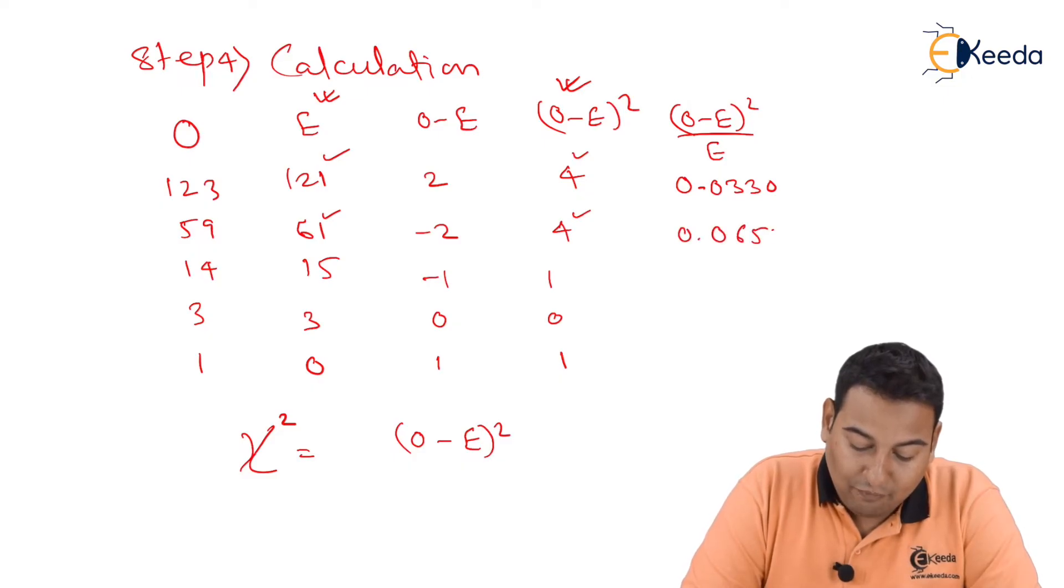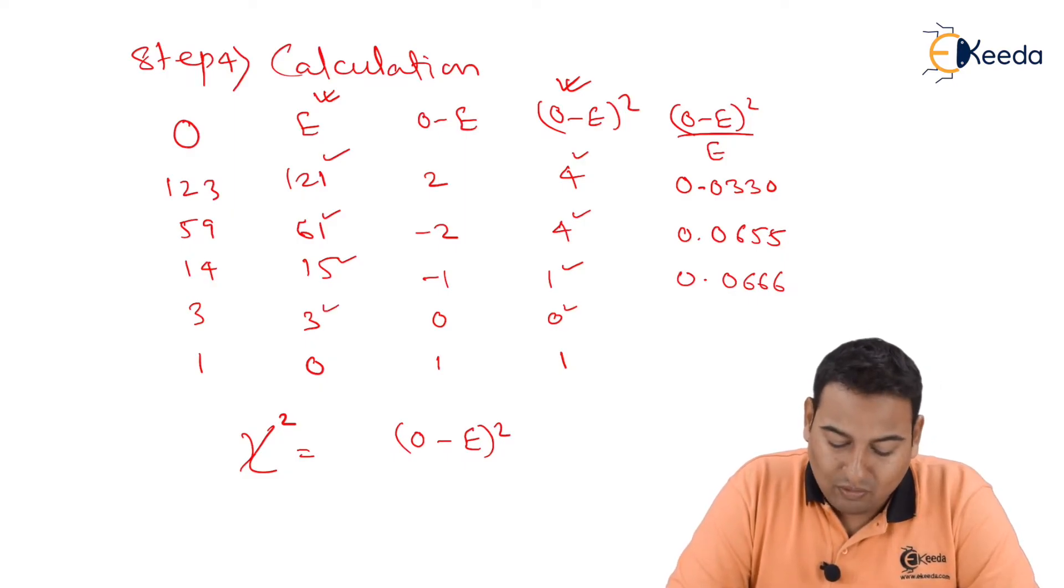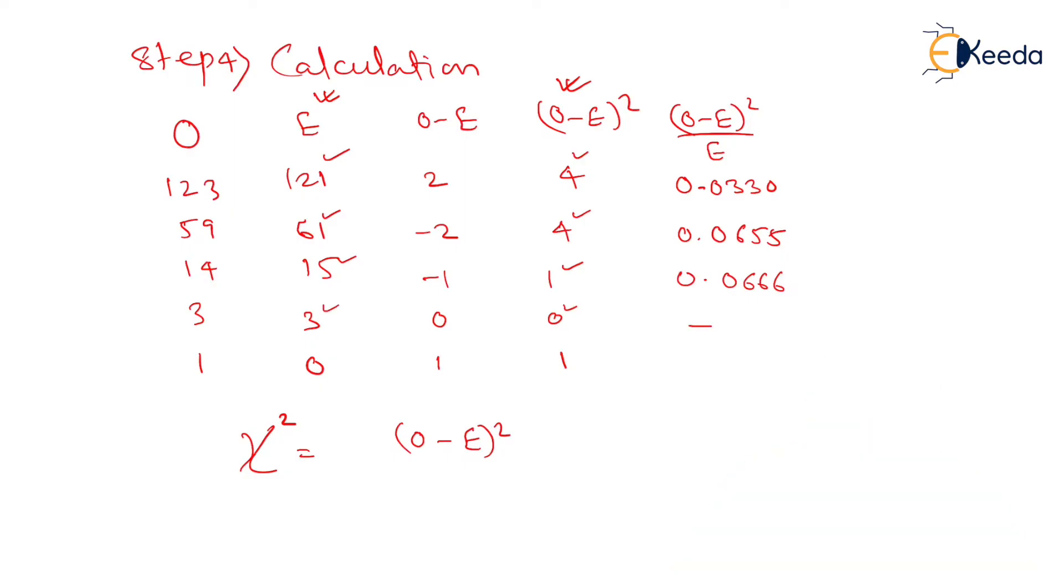1 divided by 15 is 0.0666. 0 divided by 3 is 0, but I am writing dash. And again 1 divided by 0 is dash. So I got this term. Now I need to add.